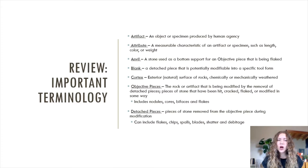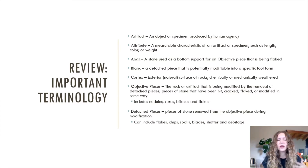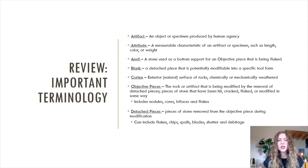We will also be learning more about objective pieces and detached pieces. Objective pieces are rocks or artifacts being modified by the removal of detached pieces — pieces of stone that have been hit, cracked, flaked, or modified in some way. These usually are cores, but they can also be nodules, bifaces, and flakes. Detached pieces are pieces of stone removed from the objective piece during modification — usually flakes, but these can also include chips, balls, blades, shatter, and other forms of debitage.